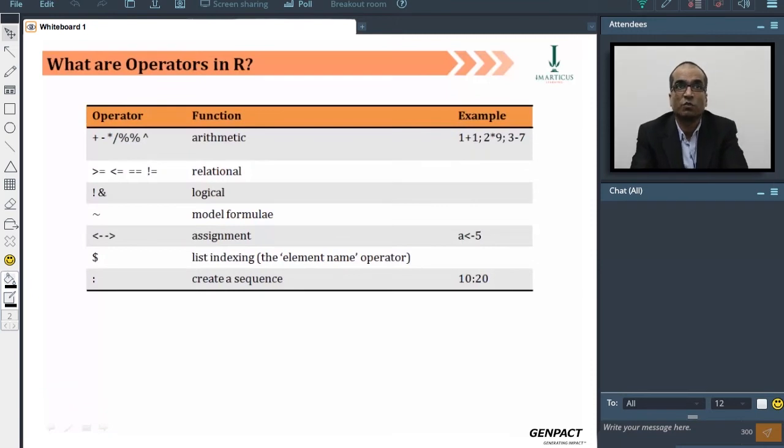What are the basic operators in R? From the mathematical aspect, there is plus and minus. Plus is indicated with the plus sign, minus with the minus sign, the asterisk sign is for multiplication, the double percent sign stands for modulo, and the inverted caret stands for raise to. If you say 2 inverted caret 2, that means 2 raise to 2, that is 4. Those are the basic arithmetic functions.